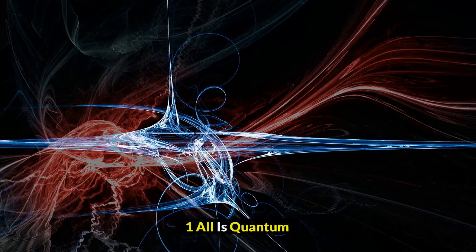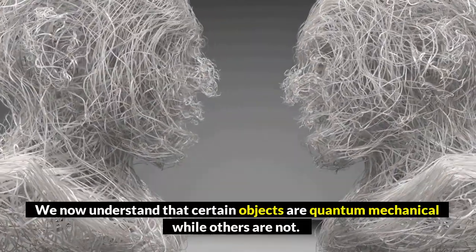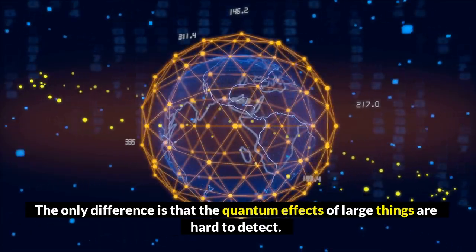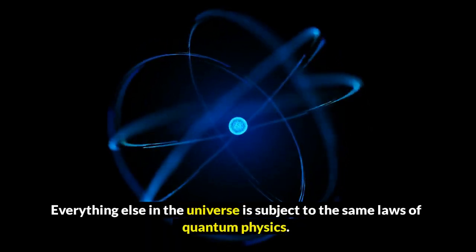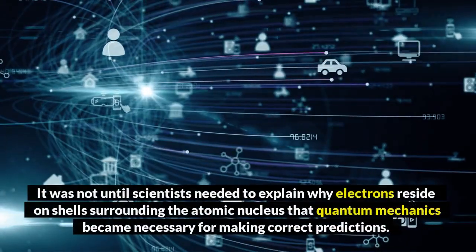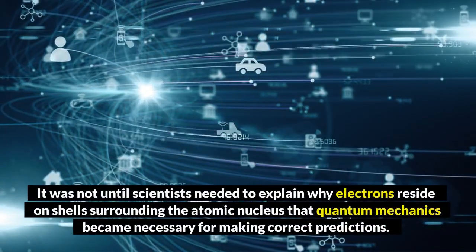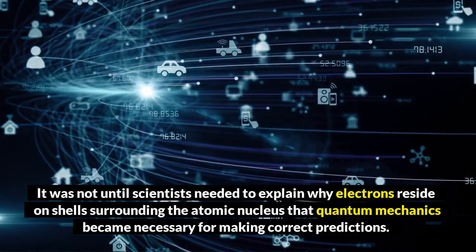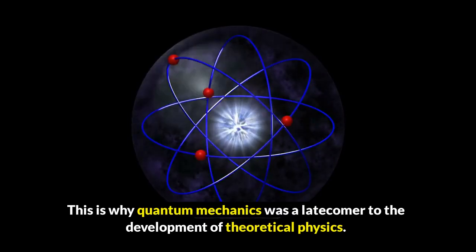1. All is quantum. We now understand that certain objects are quantum mechanical while others are not. The only difference is that the quantum effects of large things are hard to detect. Everything else in the universe is subject to the same laws of quantum physics. It was not until scientists needed to explain why electrons reside on shells surrounding the atomic nucleus that quantum mechanics became necessary for making correct predictions. This is why quantum mechanics was a latecomer to the development of theoretical physics.